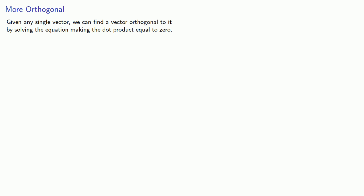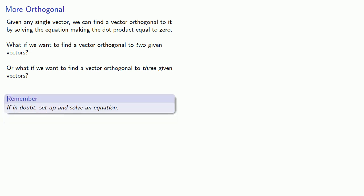So we saw that given any single vector, we can find a vector orthogonal to it by solving the equation making the dot product equal to zero. What if we want to find a vector orthogonal to two given vectors? Or what if we want to find a vector orthogonal to three given vectors? And the easy answer to that is, well, this is mathematics. If in doubt, set up and solve an equation.